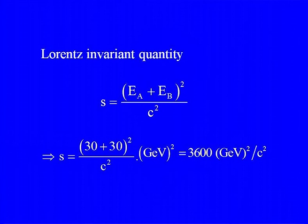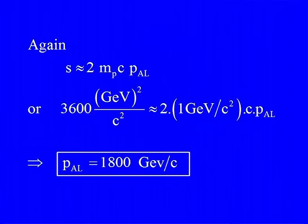Now we calculate the invariant s. s equals (30 + 30)² = 60² = 3600 GeV²/c². We then relate this to the lab system using s equals twice the proton mass times c times the lab momentum P_AL. Plugging in: 3600 equals 2 × 1 GeV/c² × c × P_AL, giving P_AL equals 1800 GeV/c — which is huge.